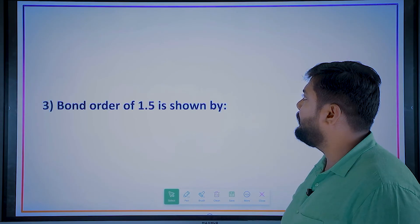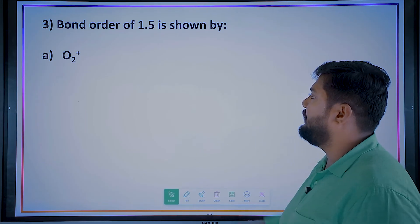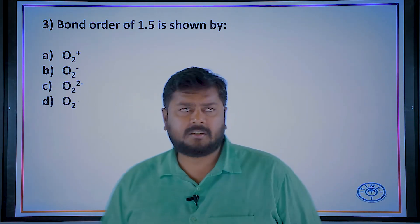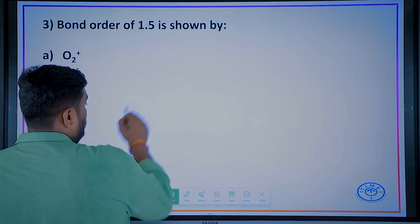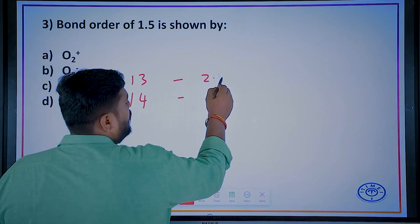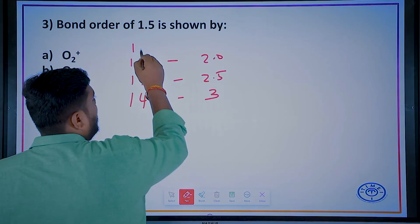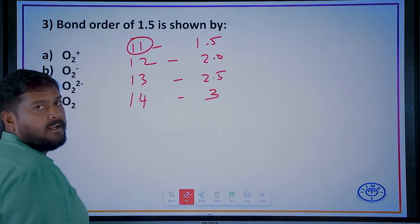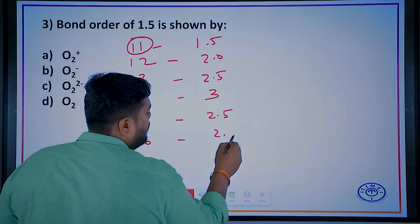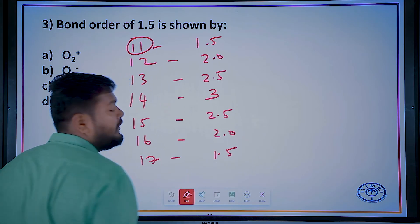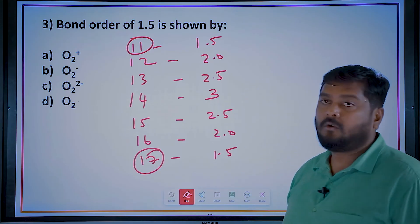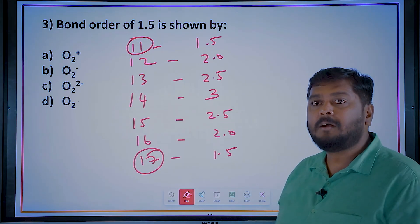Next question, bond order with 1.5. If I have 14 electrons, the bond order will be 3. If I have 13 electrons, 2.5. 12 is 2, and 11 will be 1.5. So 11 electrons. And then 15 will have 2.5, 16 will have 2, 17 will have 1.5. So what do you need to do? 1.5 has two possibilities: 11 electrons or 17 electrons.